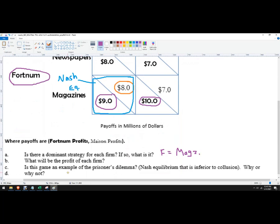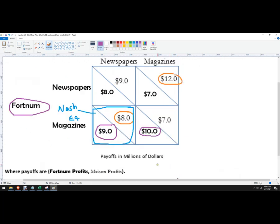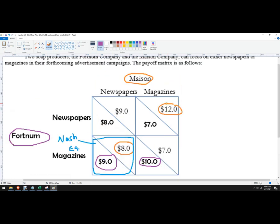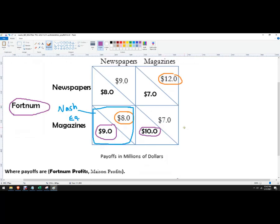Is this game an example of a prisoner's dilemma? Well, if they were to collude, Fortnum wants to be here because 10 would be their biggest profit and Mason would want to be here. So no, actually this is not a prisoner's dilemma. The competitive outcome does not result in the worst outcome. You could however see...